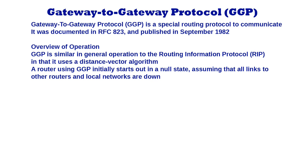A router using GGP initially starts out in a null state, assuming that all links to other routers and local networks are down. It then tests the status of its local networks by seeing if it can send and receive messages on the network. Every 15 seconds the router sends a GGP echo message to each of its neighbors. If the neighbor receives the message, it responds with a GGP echo reply message.